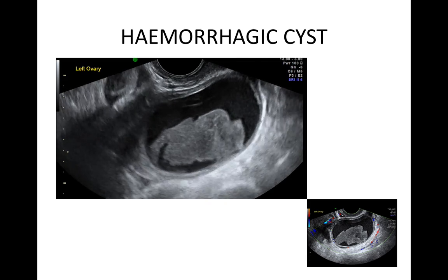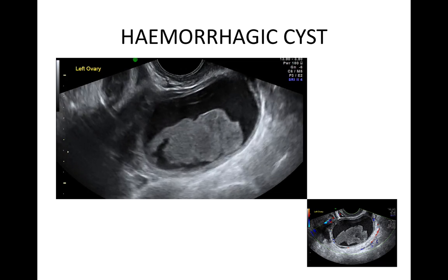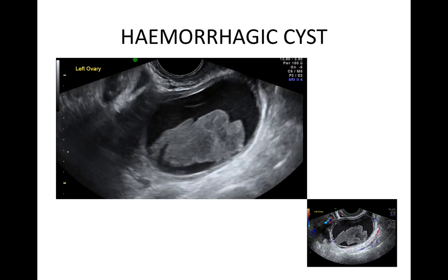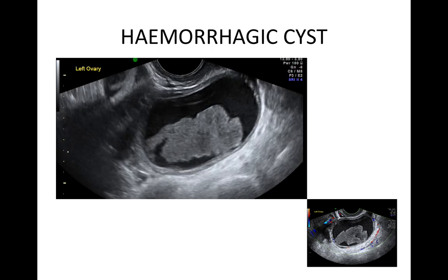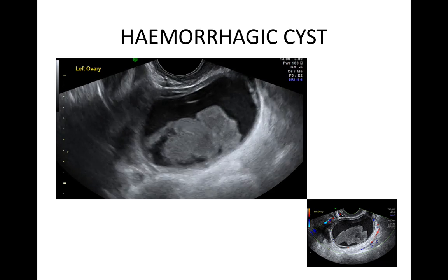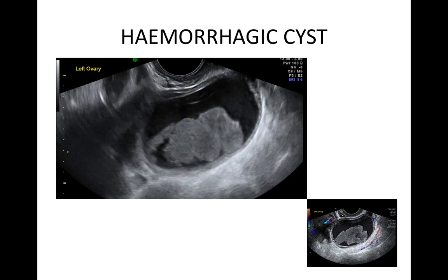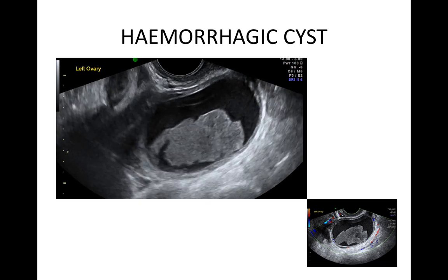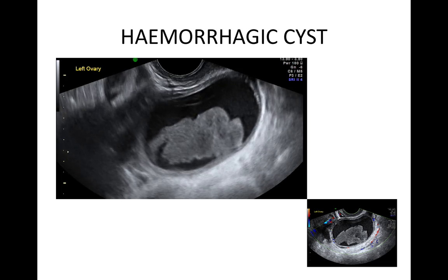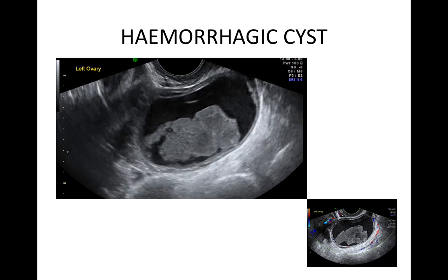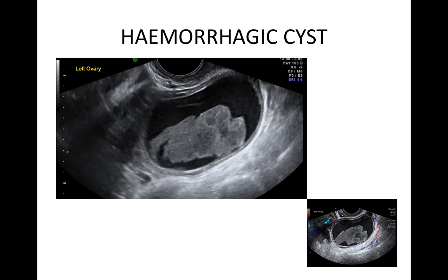This functional cyst, a hemorrhagic cyst, is unilocular with mixed echogenicity. You can see some clot adherent to the internal cyst wall. It wobbles on pressure with the ultrasound probe. The clot is not solid material and there is no internal vascularity, so this cyst is unilocular, not unilocular solid.